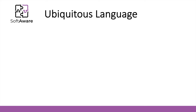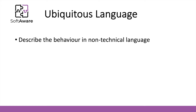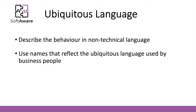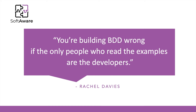In order for this collaboration to actually occur, there is a promotion to use an ubiquitous language. The idea is to describe the behavior in non-technical language so that everyone involved can actually understand the examples being written and discussed. The idea is to use names that reflect the ubiquitous language used by business people and to build the shared understanding. You're building BDD wrong if the only people who read the examples are the developers — this is a team effort and everyone should read, discuss, design, and create the examples.